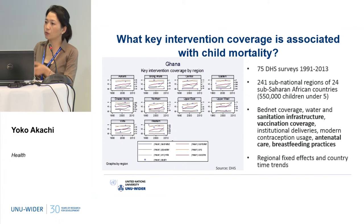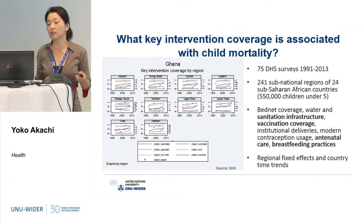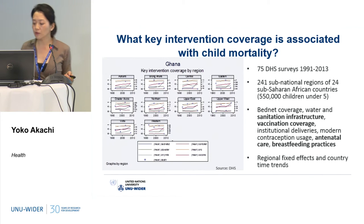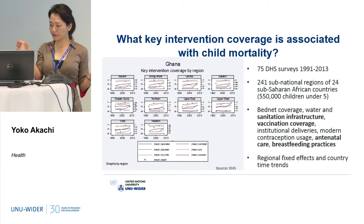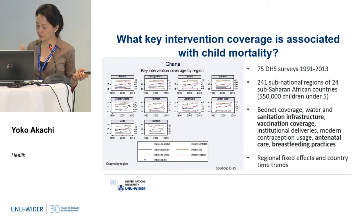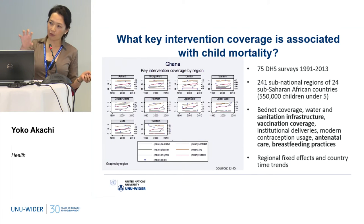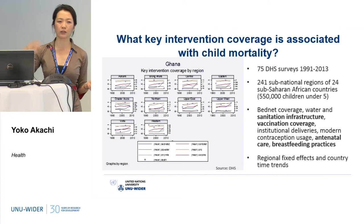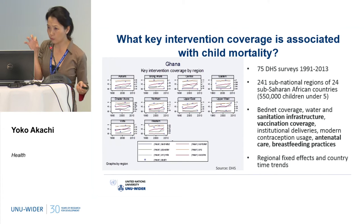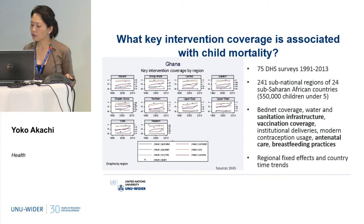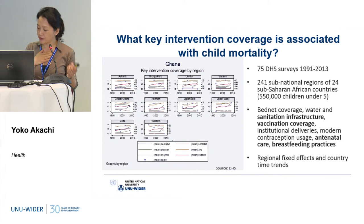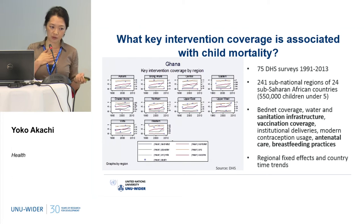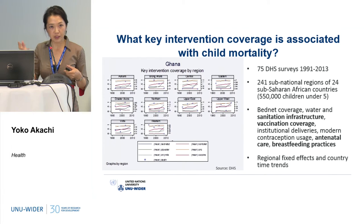One of my research projects addresses exactly this question: what key intervention coverage is associated with child mortality? We pulled all DHS surveys in sub-Saharan Africa that could be compared across more than two time points — 24 sub-Saharan African countries — and built a panel at the sub-national level to do cross-regional comparison, with 241 sub-national regions and 550,000 children under five. We ran regional fixed effects with country time trends, using both logistic and OLS models.